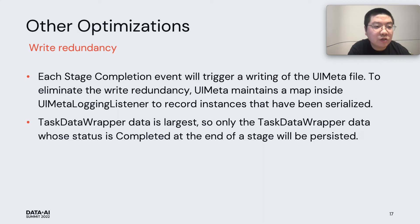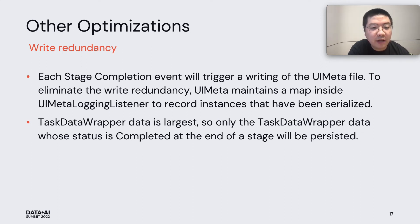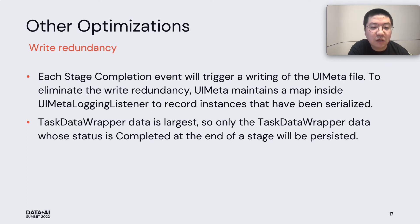Besides that, we also did some optimization work. The first is writing redundancy. Each stage complete event triggers a write for the UI meta files. To eliminate writing redundancy, UI Meta contains a map inside its listener to record instances that have already been serialized. Also, the task data wrapper data is very large, so only task data whose state is completed at the end of the stage will be persisted.